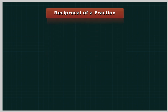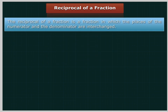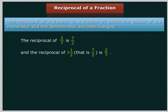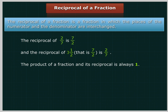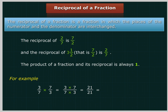Reciprocal of a fraction: The reciprocal of a fraction is obtained by interchanging the numerator and the denominator. The reciprocal of 2 upon 7 is 7 upon 2. The reciprocal of 3 and 1 upon 2, that is 7 upon 2, is 2 upon 7. The product of a fraction and its reciprocal is always 1. For example, 3 upon 7 multiplied by 7 upon 3 is equal to 21 upon 21, which is equal to 1.